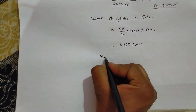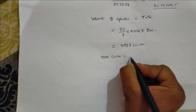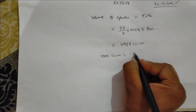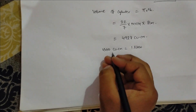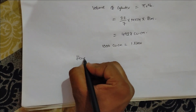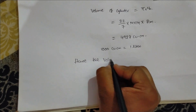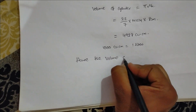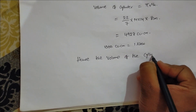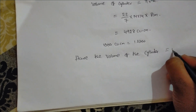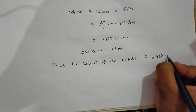Here 100,000 cubic centimeters is equal to 1 liter. So when we convert it, the volume of the cylinder is equal to 4928 liters.